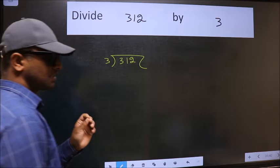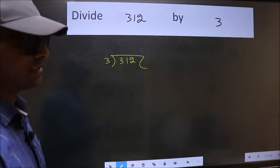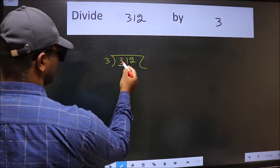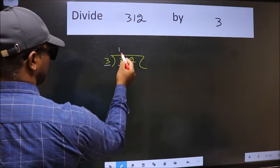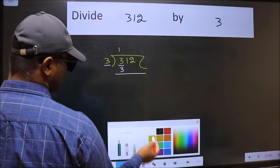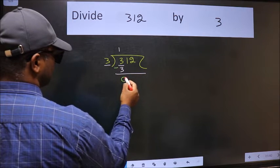This is your step 1. Next, here we have 3, here also 3. When do we get 3 in 3 table? 3 once 3. Now we should subtract. We get 0.